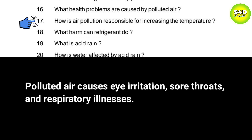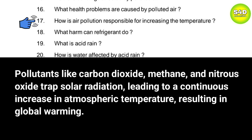Question 17: How is air pollution responsible for increasing the temperature? Answer: Pollutants like carbon dioxide, methane, and nitrous oxide trap solar radiation, leading to a continuous increase in atmospheric temperature, resulting in global warming.